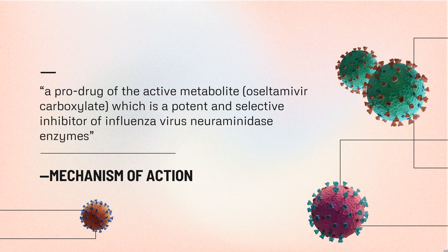Mechanism of Action: Oseltamivir phosphate is a prodrug of the active metabolite Oseltamivir carboxylate, which is a potent and selective inhibitor of influenza virus neuraminidase enzymes — glycoproteins found on the virion surface. Viral neuraminidase enzyme activity is important for viral entry to uninfected cells, for the release of recently formed virus particles from infected cells, and for the further spread of the infectious virus in the body. Oseltamivir activity reduces viral shedding and infectivity.